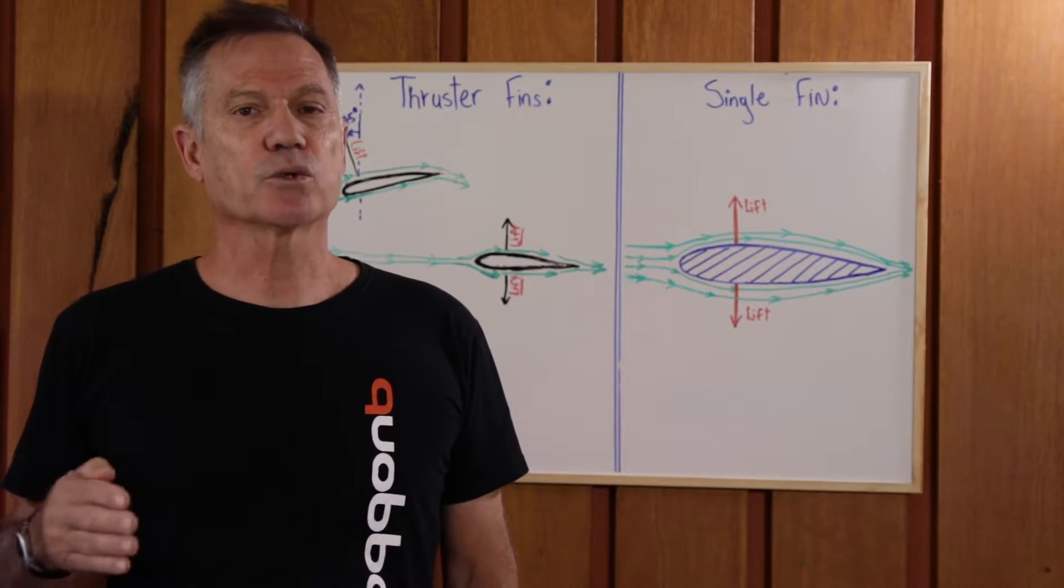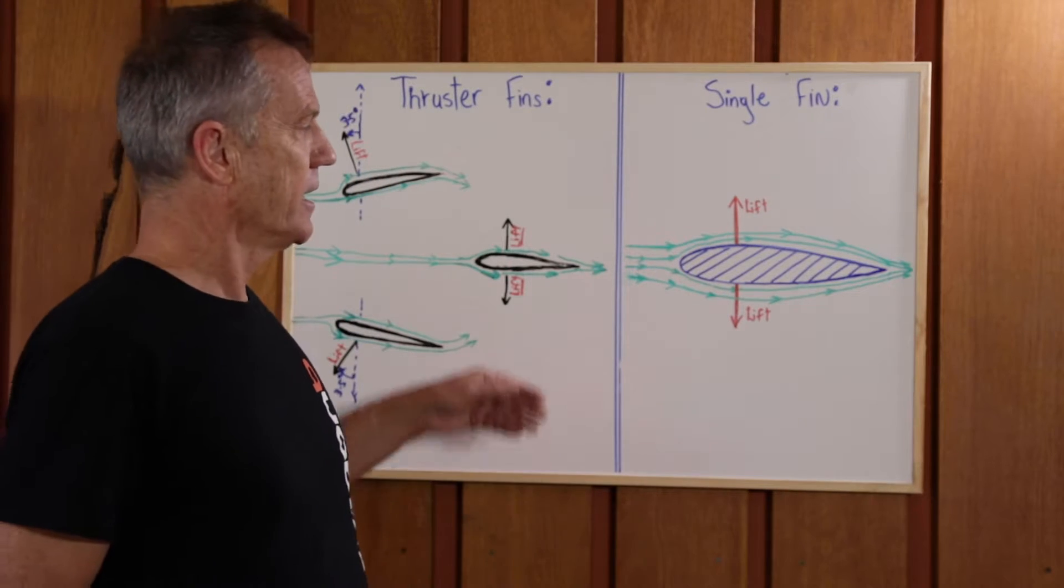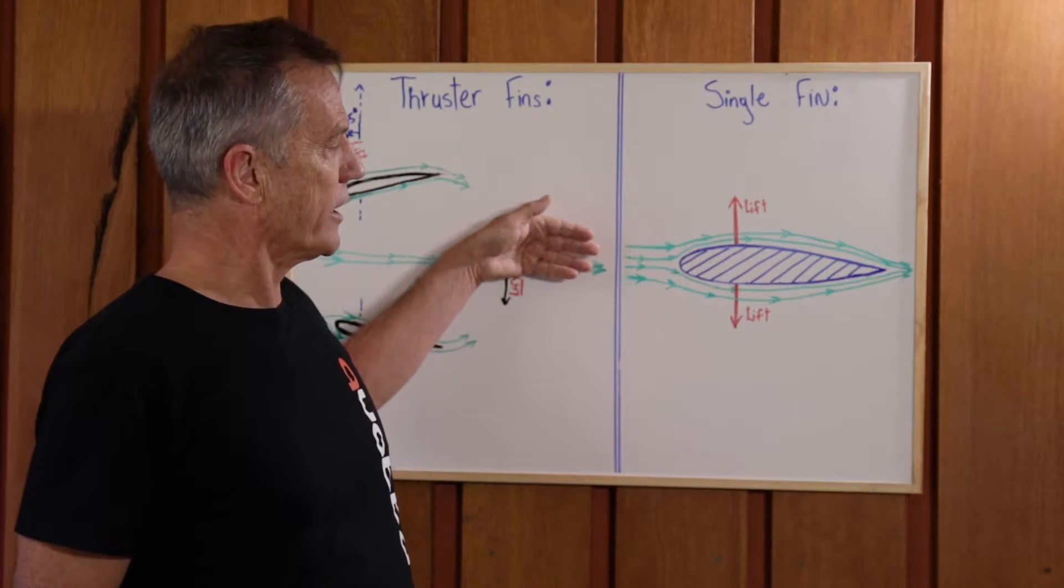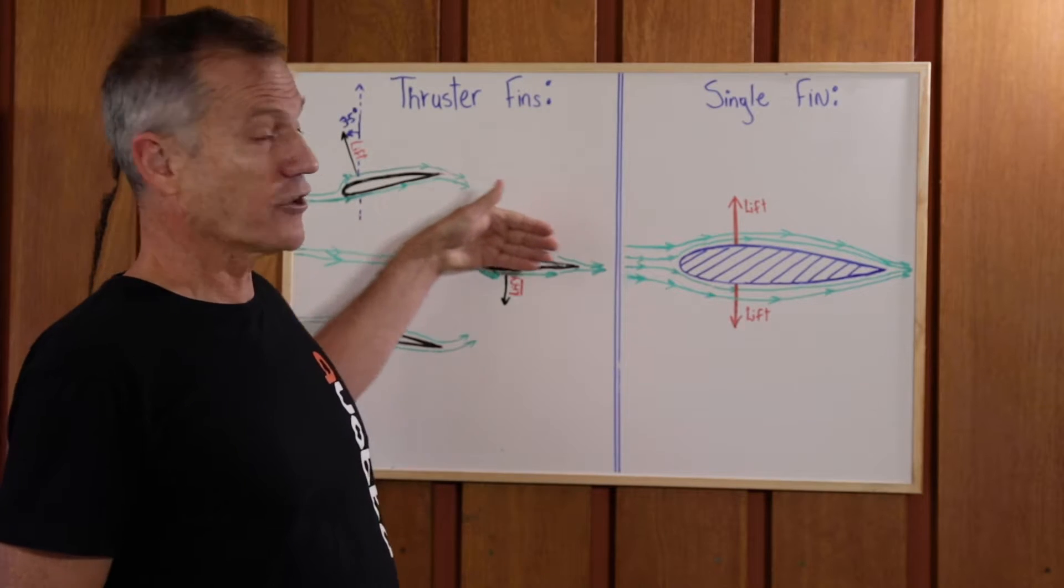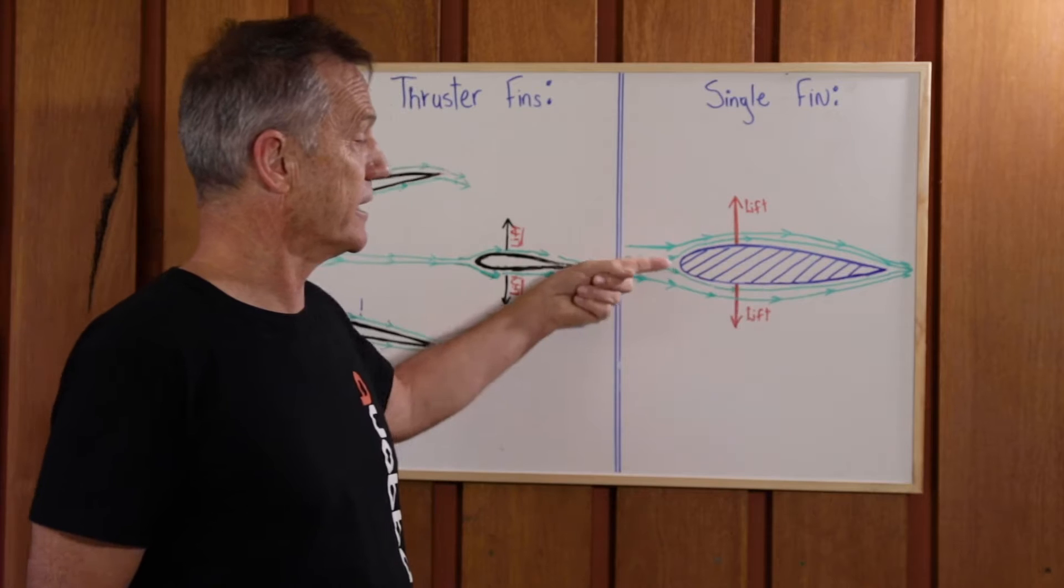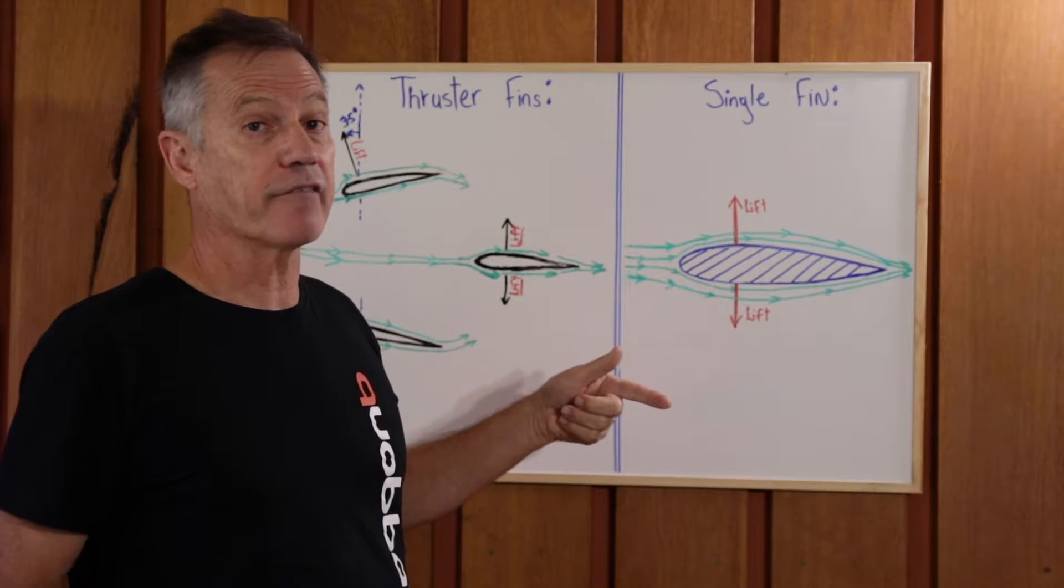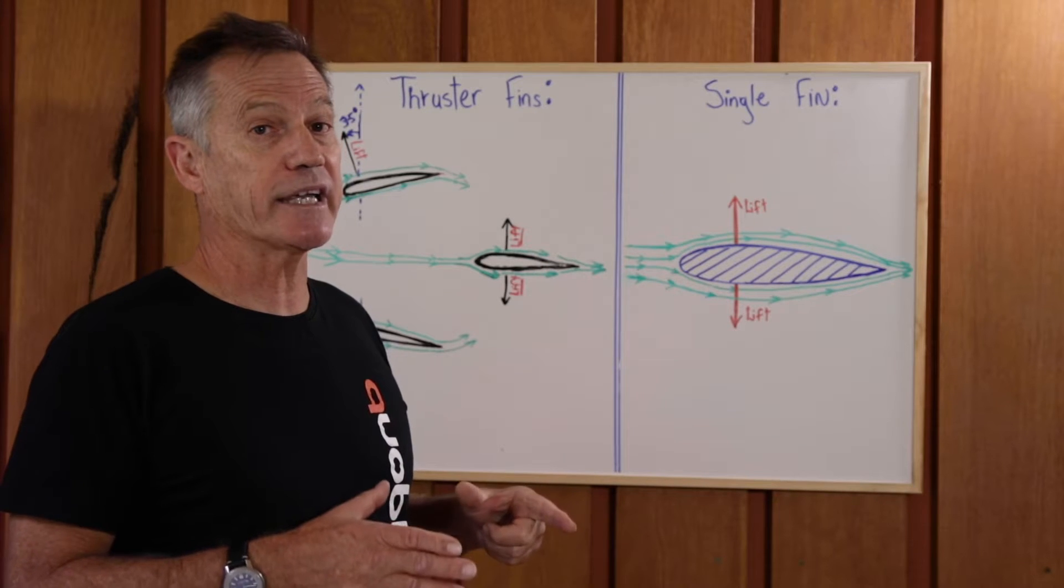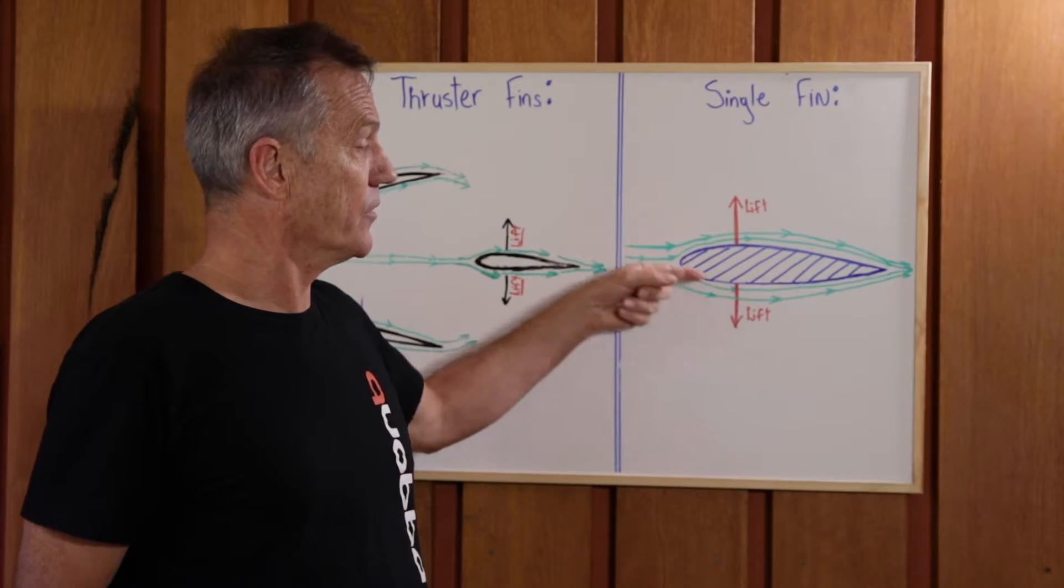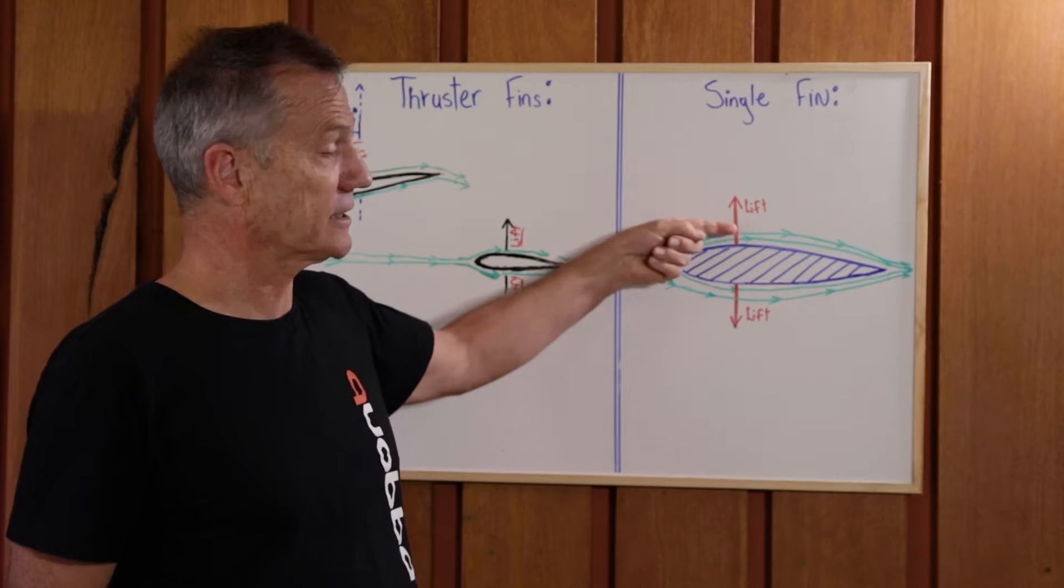However, to start with, we'll start with how single fins work. Go back to the basics there. Imagine that water is flowing from the front of the surfboard to the leading edge of the fin. This is the trailing edge, this is the leading edge. As the water moves around each side of the fin—and remember a single fin is foiled equally each side—so the water has to move basically the same speed this side as it does that side.